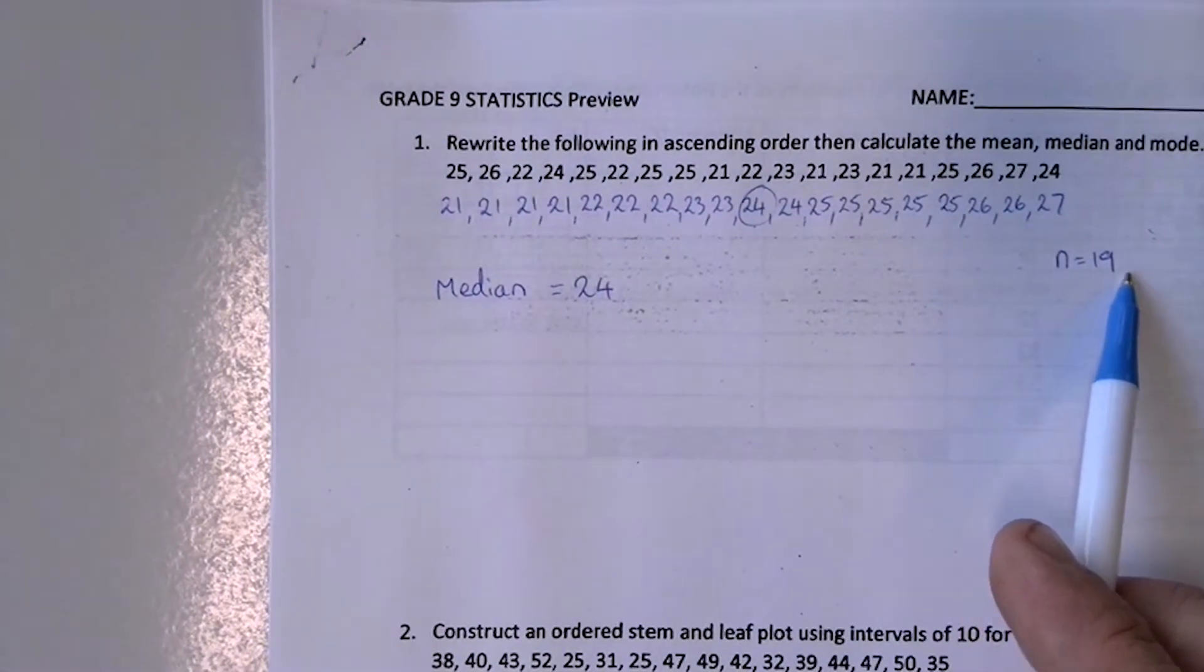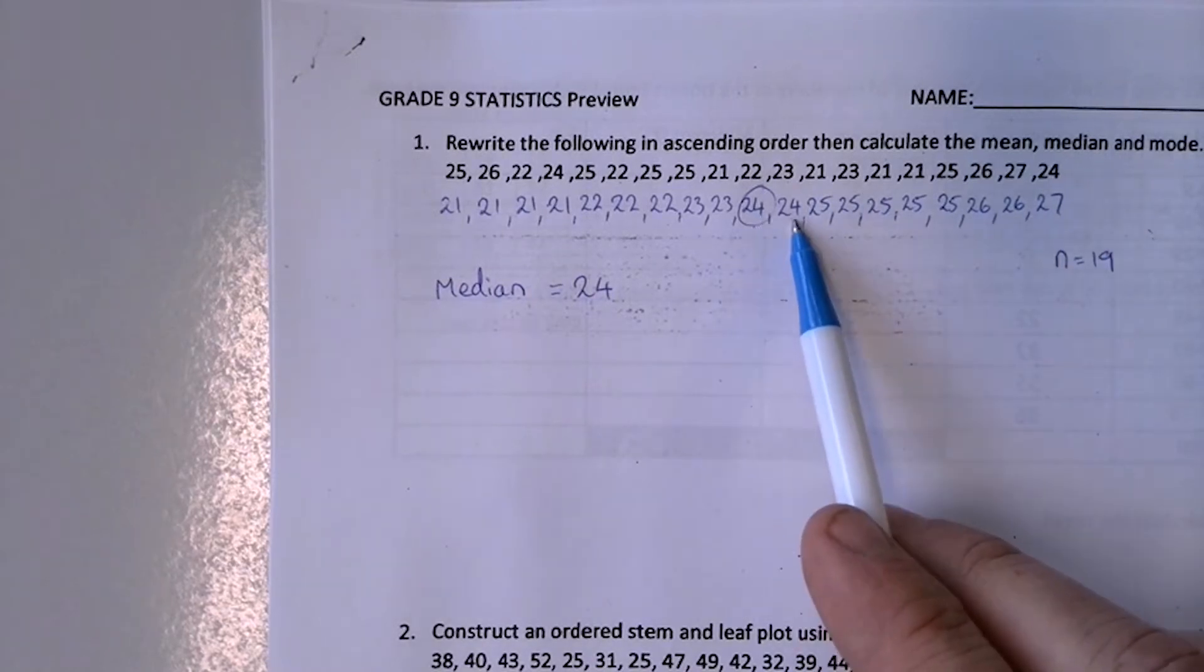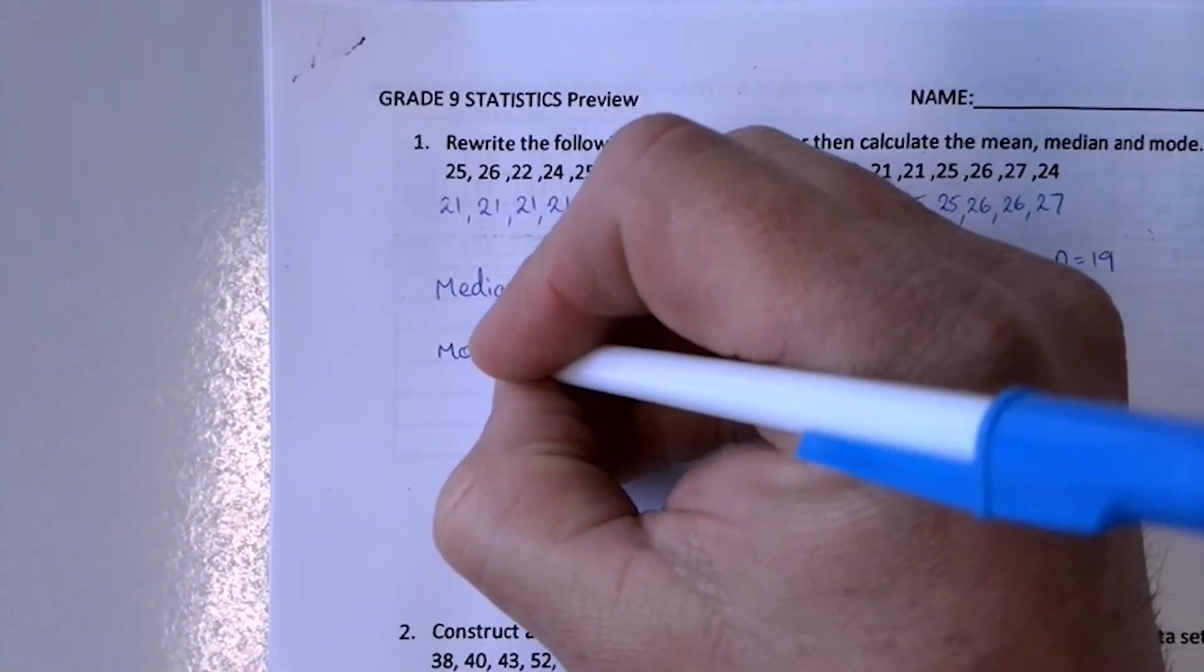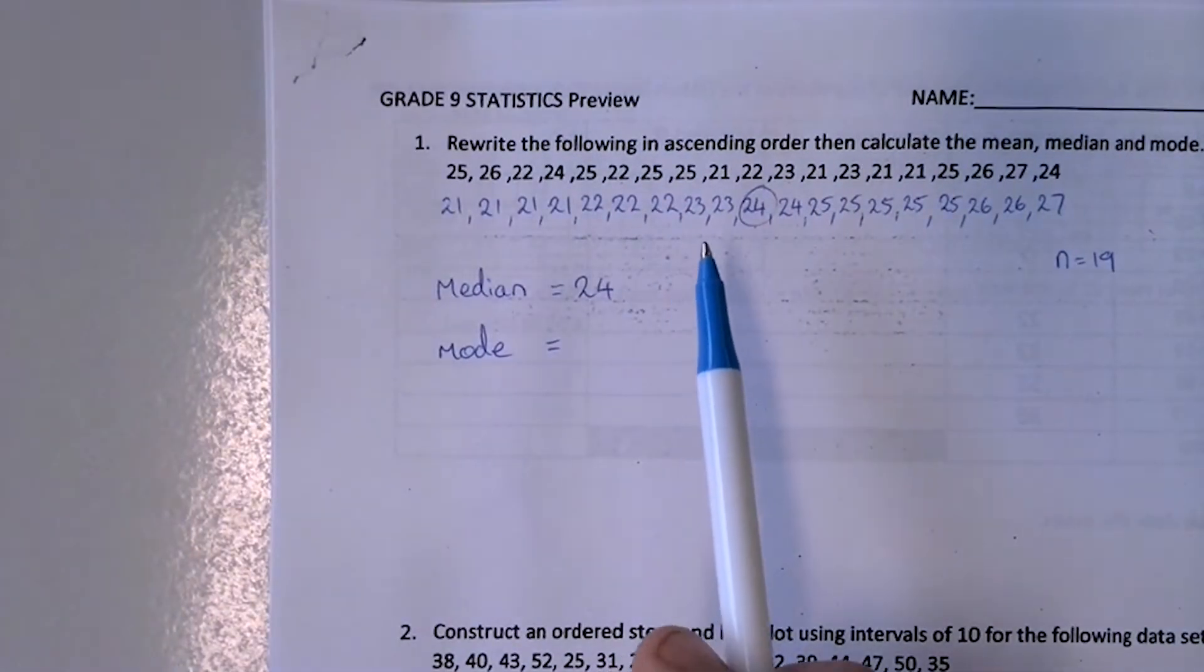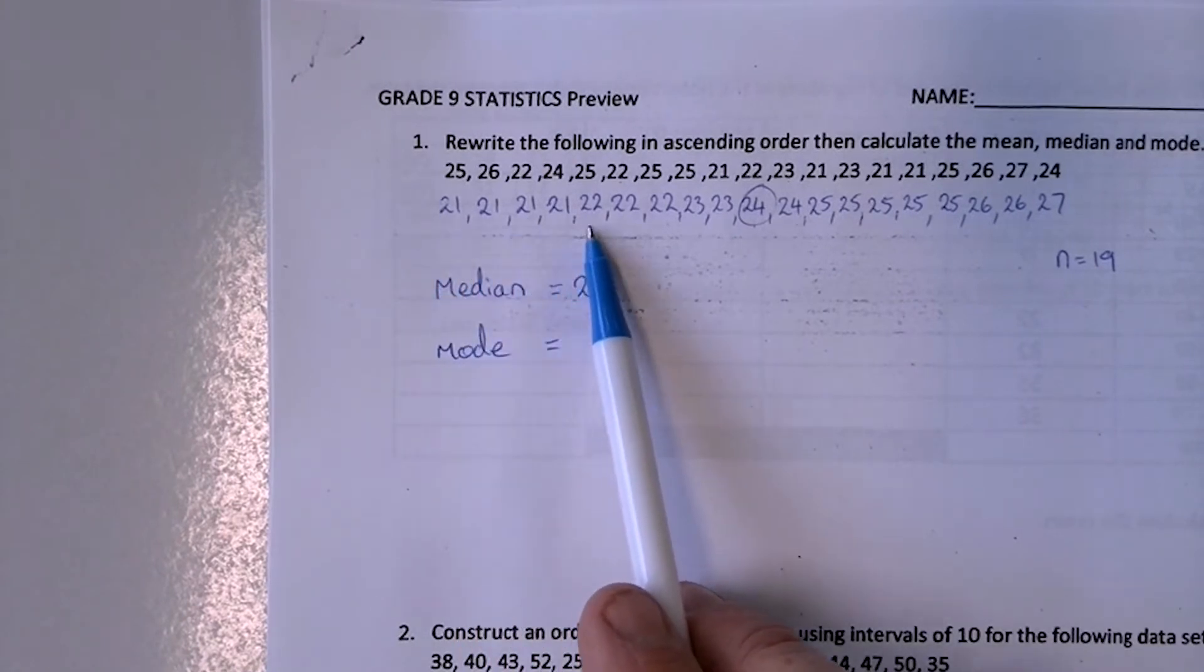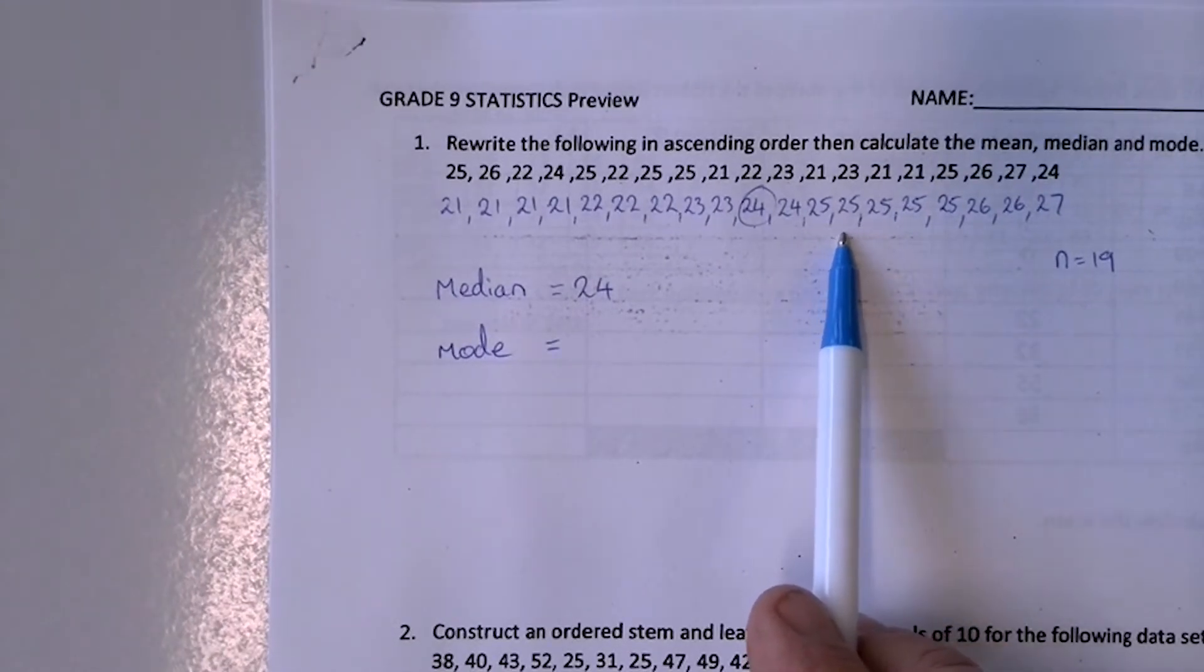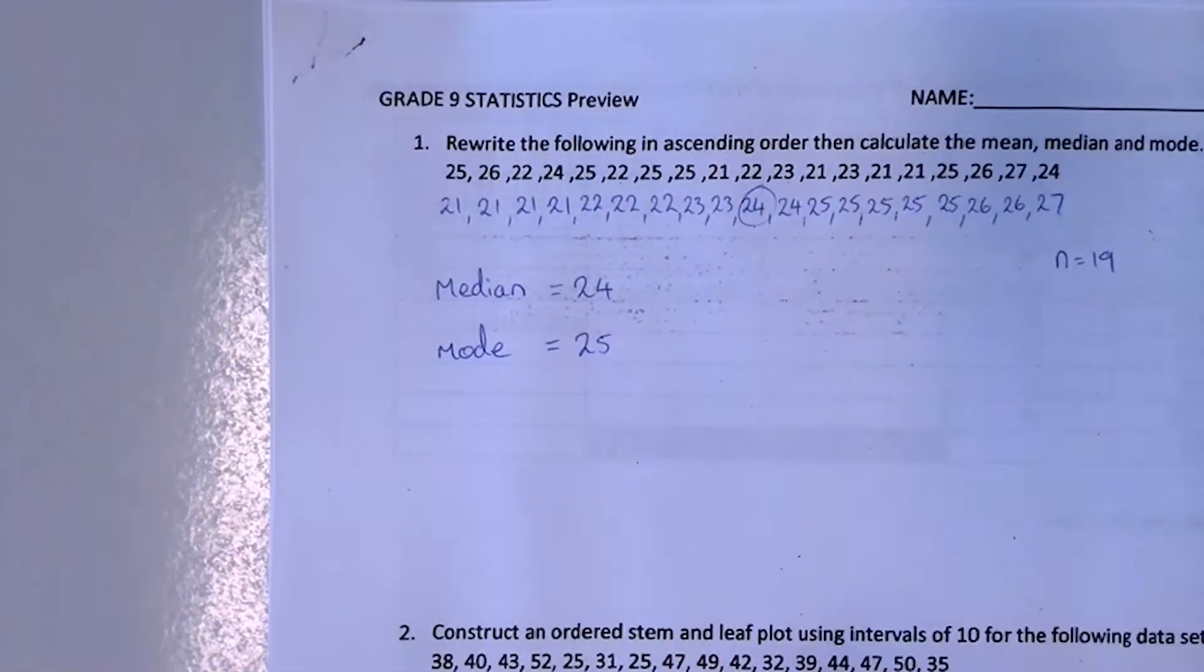Remember if you have an even number of scores, you'd have to find halfway between two scores. So you can add them up and divide by 2 to do that. The mode is the score that happens most frequently. So that means it happens the most times. So if you scan through here, 21 happens four times. If you keep going, 1, 2, 3, 4, 5. 25 happens more times than that. So it's going to be the most frequently occurring score.